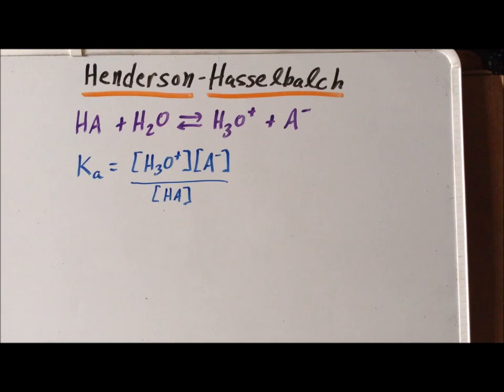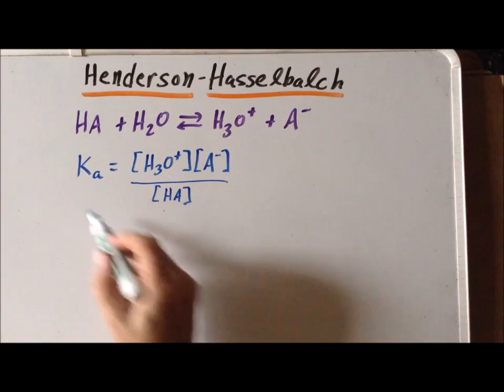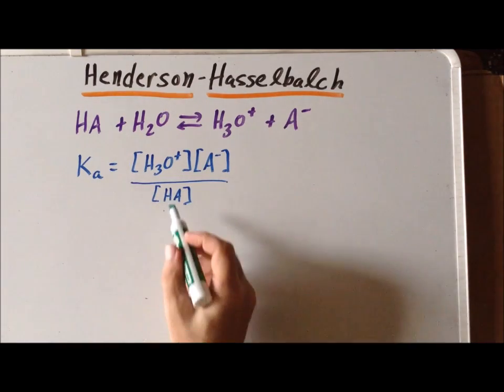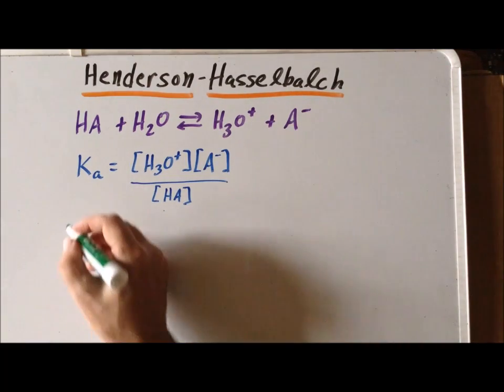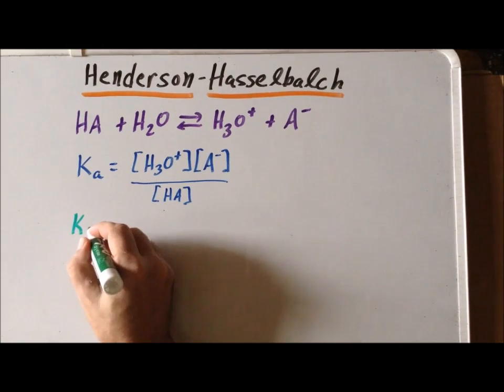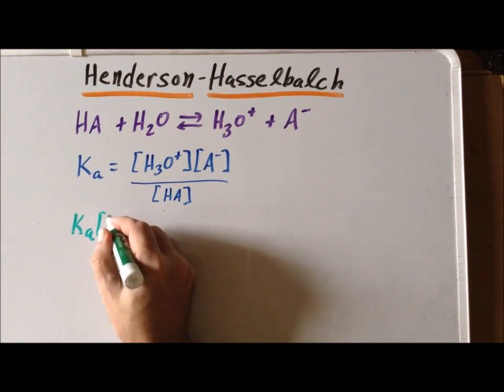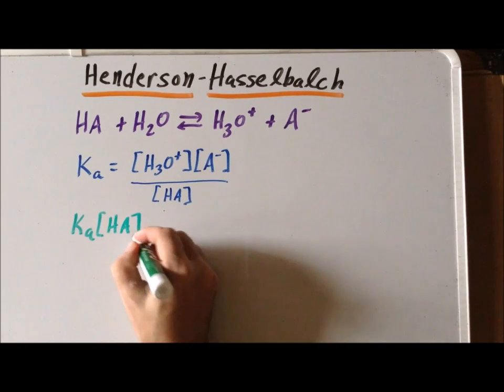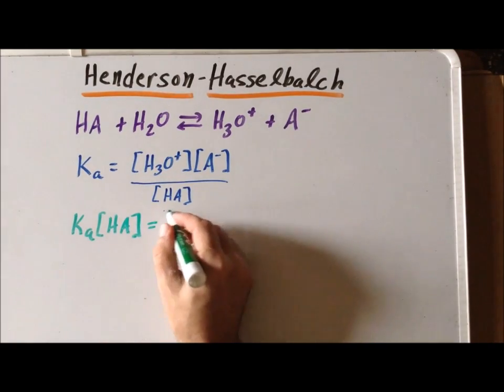Our next step is to multiply each side of this equation by the concentration HA. That gives us Ka times the concentration HA is equal to the concentration of H3O+ times A-.